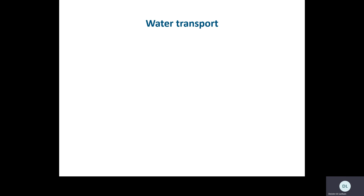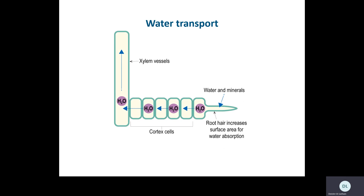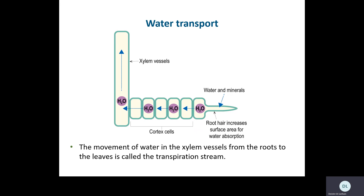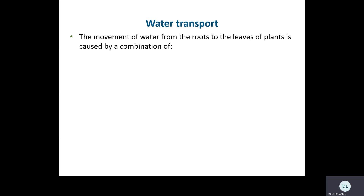Now we move on to water transport. A key function of a plant is to transport water from the roots all the way up through the plant — where it may be needed for photosynthesis — and out through the leaves if there's any excess. Water comes in through the roots, moves across into the xylem vessels, and travels up and out through the leaves. This overall process is called the transpiration stream.